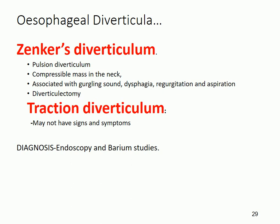Zenker's diverticulum is associated with a gurgling sound, dysphagia, regurgitation, and aspiration. Dysphagia means difficulty swallowing, due to the presence of this mass in the neck. Regurgitation means food can return from the stomach, and aspiration means food can go to the lungs, causing different diseases. The main treatment is diverticulectomy — removing the wall of the diverticulum.